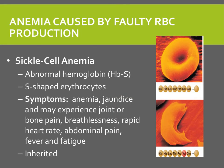Anemia caused by faulty red blood cell production includes sickle cell anemia. In sickle cell anemia, the hemoglobin is made abnormally. The S-shaped erythrocytes cannot carry oxygen as well because they are not made in the same way. It is only one amino acid change that creates this effect. Symptoms include anemia, jaundice, joint or bone pain, breathlessness, rapid heart rate, abdominal pain, fever, and fatigue. This is an inherited disease.